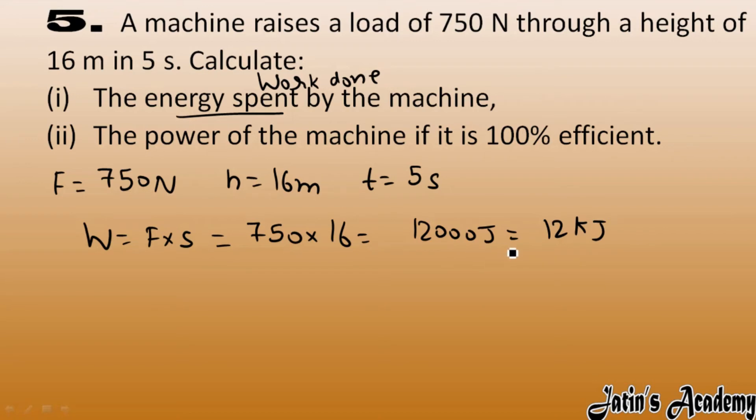Next we have power of machine. Power is work done per unit time. Work done we have 12,000 over time we have 5 seconds. Divide this, you get 2400 watt.